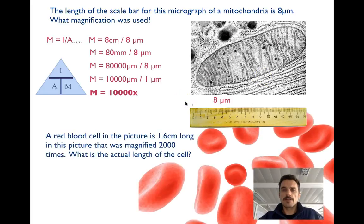All right, here's another example with some red blood cells. I measure one across with my ruler and it's 1.6 centimeters long in the picture. I'm told the magnification is 2,000 times larger than life. So what's the actual size of a red blood cell? Well, we can do that using our IM again.